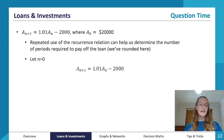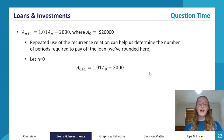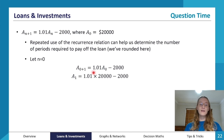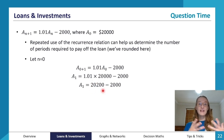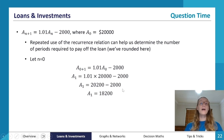Starting with n = 0: A₁ = 1.01 × A₀ − 2000. This makes sense — the amount after one month equals the original amount grown by the interest factor, minus the $2,000 repayment. The loan has increased by $200 in interest but then shrinks because we pay off $2,000, leaving $18,200 still owing after one month.